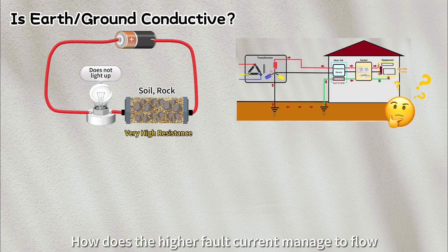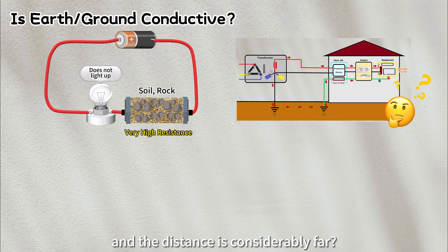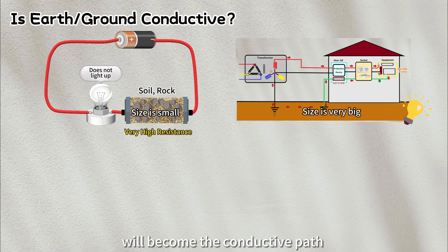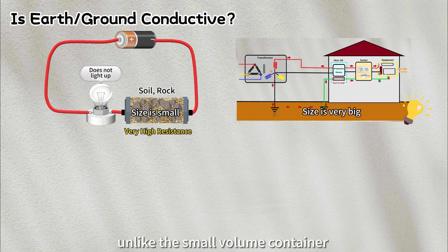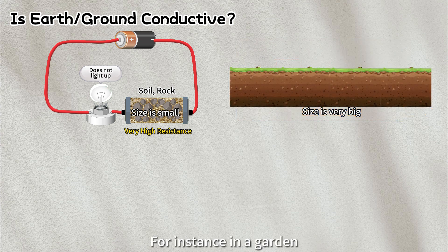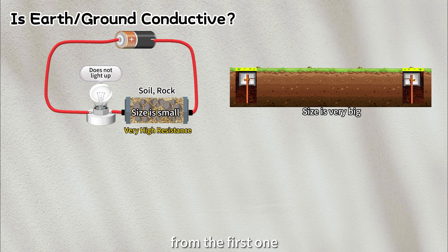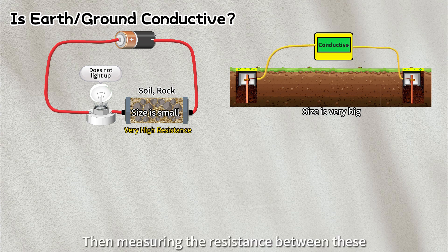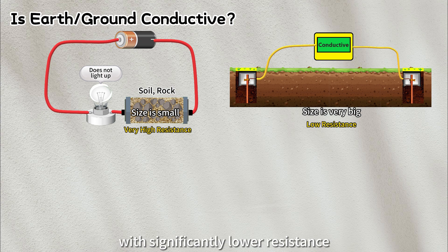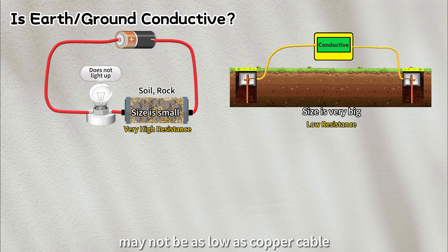This may prompt you to wonder, how does the higher fault current manage to flow when the soil in the ground has very high resistance, and the distance is considerably far from our house to transformer station? In fact, the soil or ground will become the conductive path when the size involved is very huge, unlike the small volume container used in the previous experiment. For instance, in a garden, if we insert an earth rod into the ground and position another earth rod at a certain distance from the first one, then measuring the resistance between these earth rods will indicate a conductive result with significantly lower resistance. Although the ground resistance value may not be as low as copper cable, it is still sufficiently small to allow higher fault currents to flow.